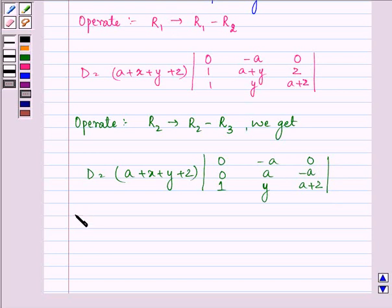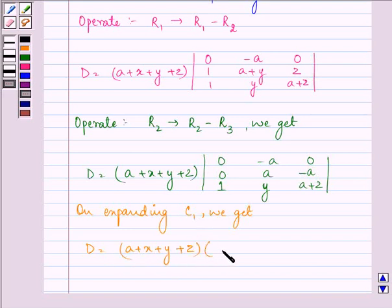Now on expanding column 1 we get a plus x plus y plus z into 0 minus 0 plus 1 into a squared minus 0.